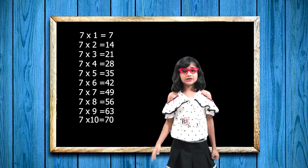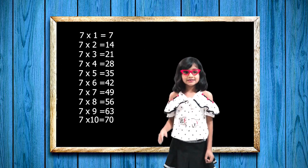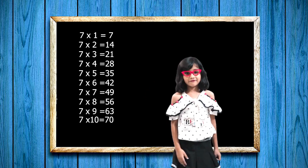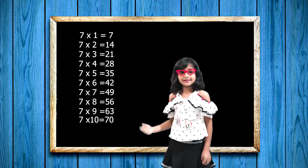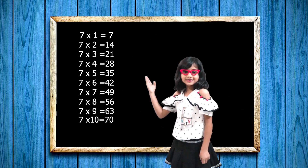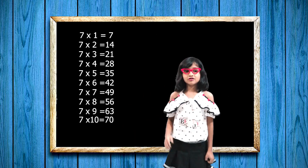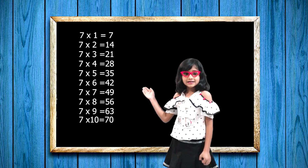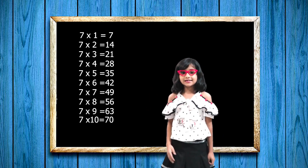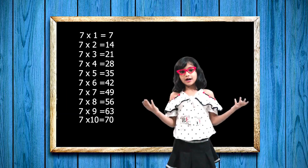So guys, let's repeat. Seven one's a seven, seven two's a fourteen, seven three's a twenty-one, seven four's a twenty-eight, seven five's a thirty-five, seven six's a forty-two, seven seven's a forty-nine, seven eight's a fifty-six, seven nine's a sixty-three, seven ten's a seventy.